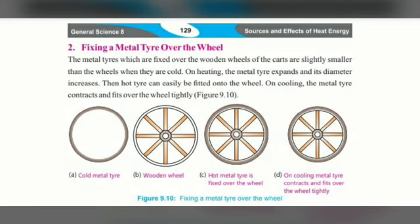We will heat the metal tire and its diameter will increase. Then the hot tire can easily be fitted over the wheel. On cooling, the metal will contract and fix the wheel tightly. This demonstrates how solids expand on heating and contract on cooling.